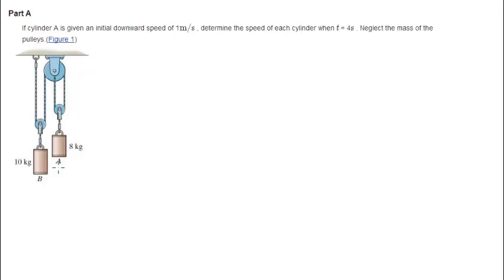We're going to say that cylinder A is given an initial velocity of 1 meter per second. Now, I want you to think of the relationship of the velocities between the pulleys. If A goes down at 1 meter per second, that means B is going to go up at 1 meter per second. That's an important relationship to note.